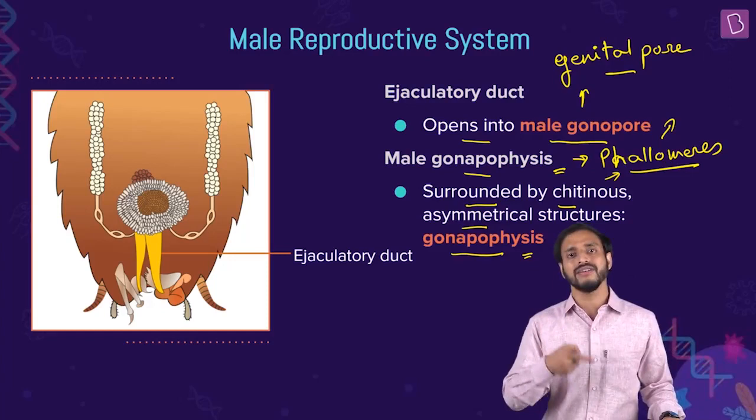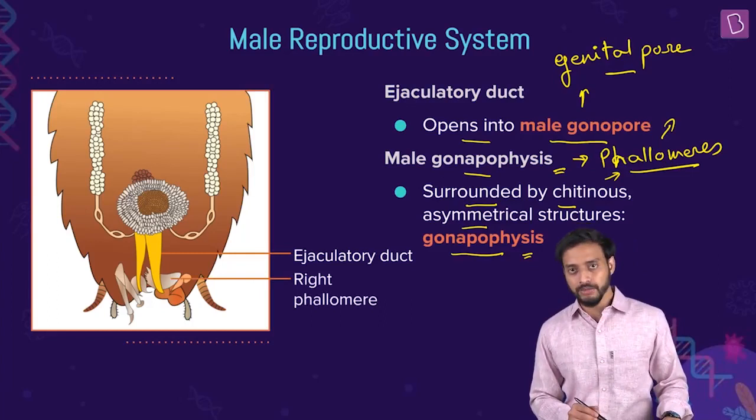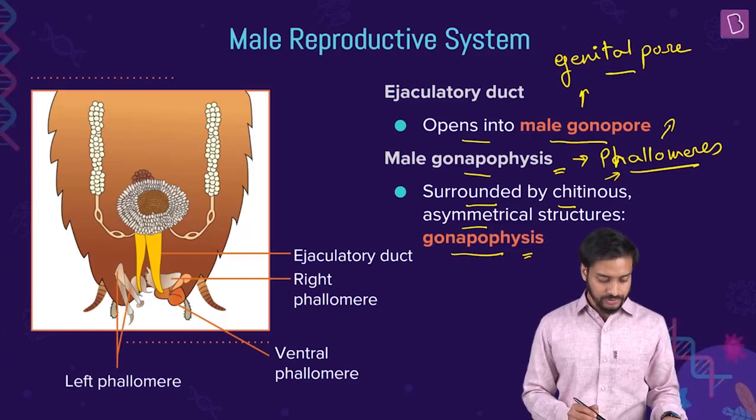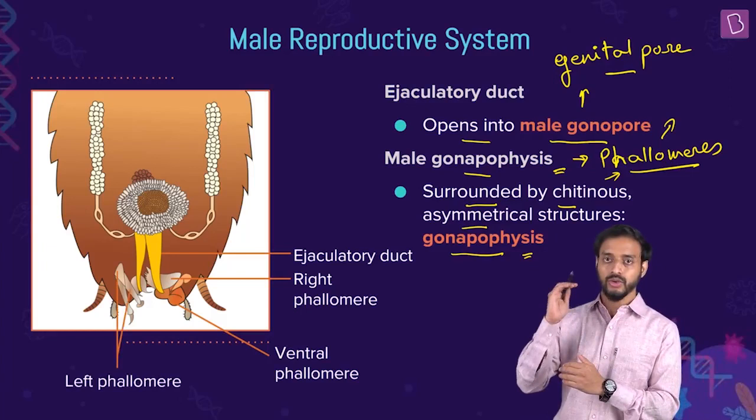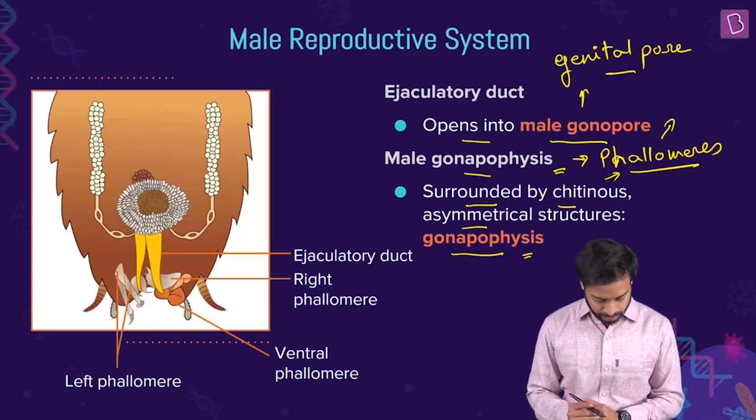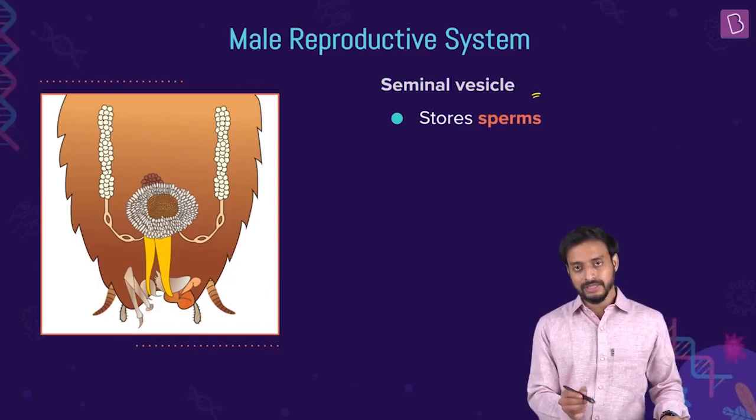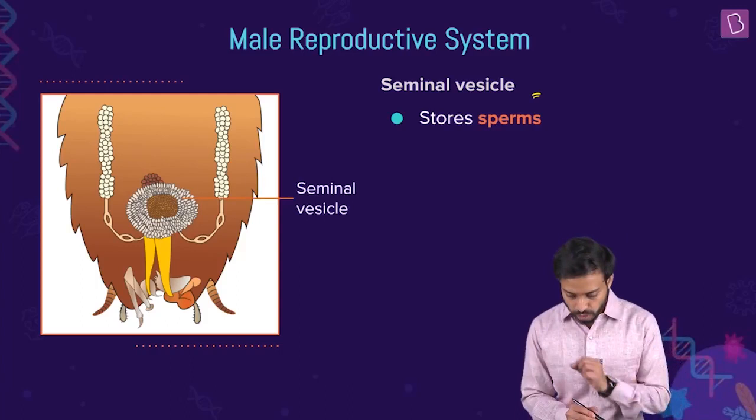The male gonapophysis or phallomeres are also termed the external genitalia of males. There are three phallomeres: the right phallomere, the ventral phallomere, and the left phallomere.